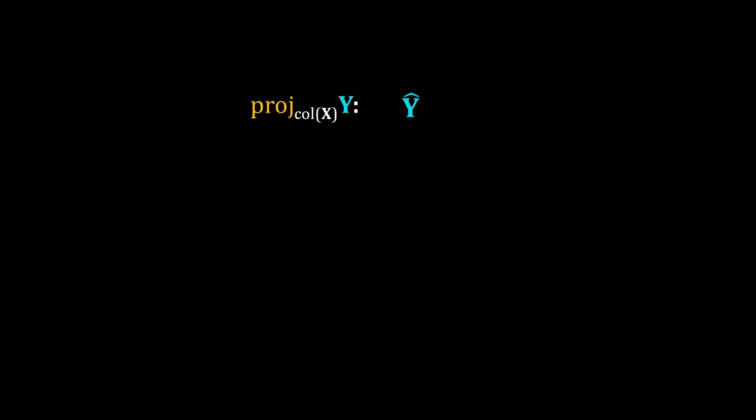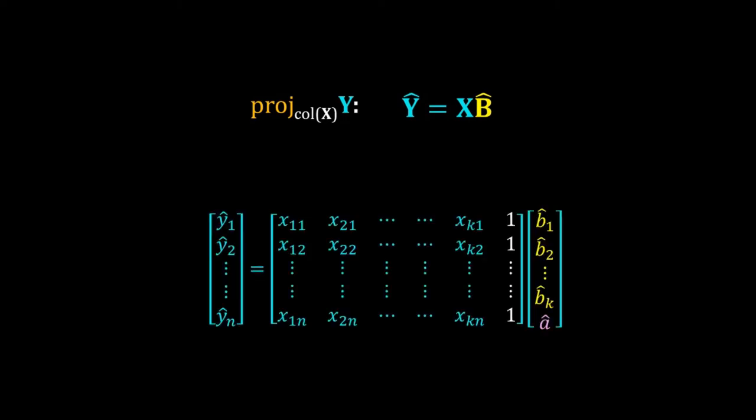Let that projection vector be y_hat. y_hat is a vector obtained by the linear combination of columns of X, equal to X times b_hat. b_hat is a column vector with k scalar terms — these are the estimated coefficients of our regression equation: b1_hat, b2_hat, up to bk_hat, and a_hat.